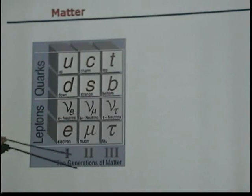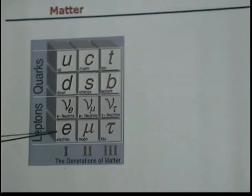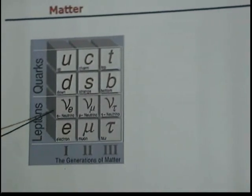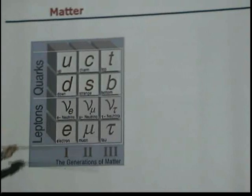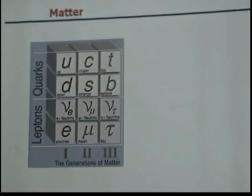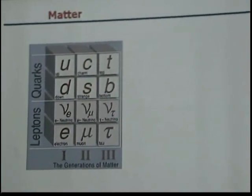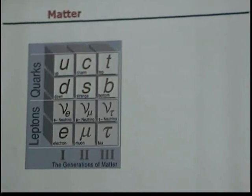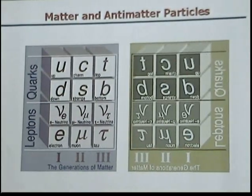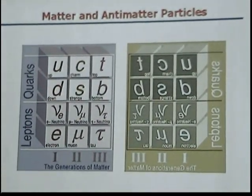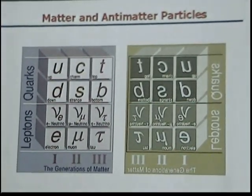And there are six leptons — electrons, muons, and tau leptons with their associated neutrinos. That's what we believe everything is built on. Of course, every particle also has its anti-particle.